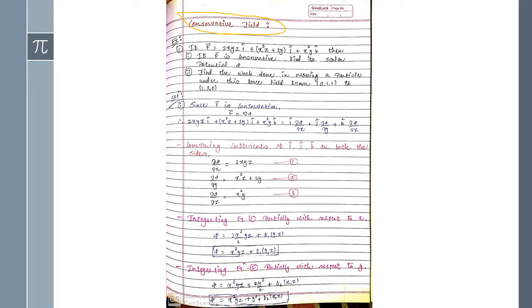Here is the first question: if F̄ equals 2xyz î plus (x²z + 2y) ĵ plus x²y k̂, then there are two conditions to find. First condition: if F̄ is conservative, find its scalar potential, denoted as φ. Second condition: find the work done in moving a particle under this force field from (0,1,1) to (1,2,0).